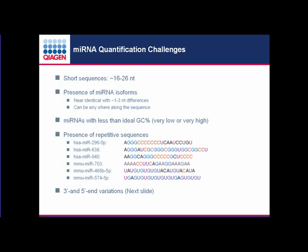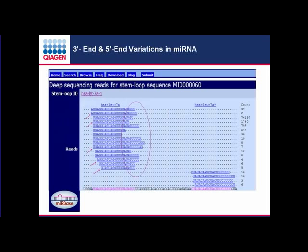MicroRNAs also exhibit 3' and 5' end variations. Deep sequencing data from microRNA libraries across a variety of cell and tissue types suggest that the 3' and 5' ends of microRNAs are not fixed — they can vary based on cell type and physiological conditions. Because of this variation, the 3' end is no longer a fixed sequence, and this 3' end polymorphism has an impact on how we perform real-time PCR quantification of microRNAs.